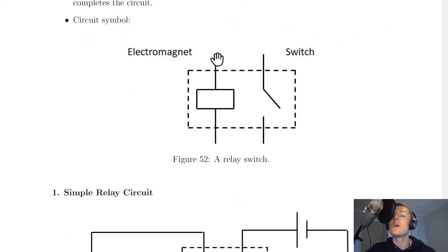So when the current passes through the coil of the electromagnet, it causes the switch to close, which can then allow current to flow in another circuit. So it's a way of connecting two circuits together: a low voltage one and a high voltage one.